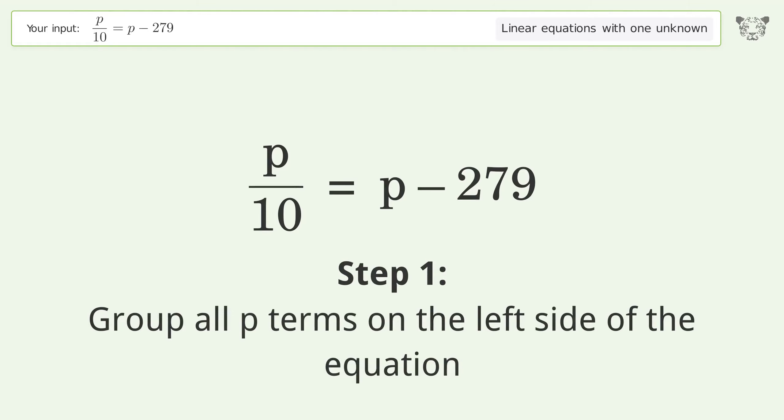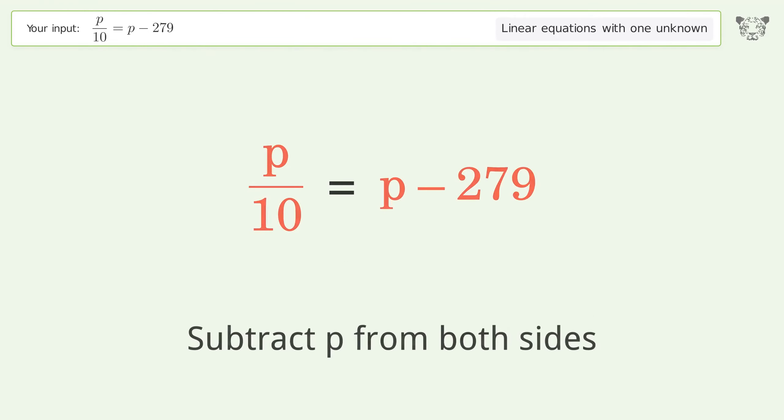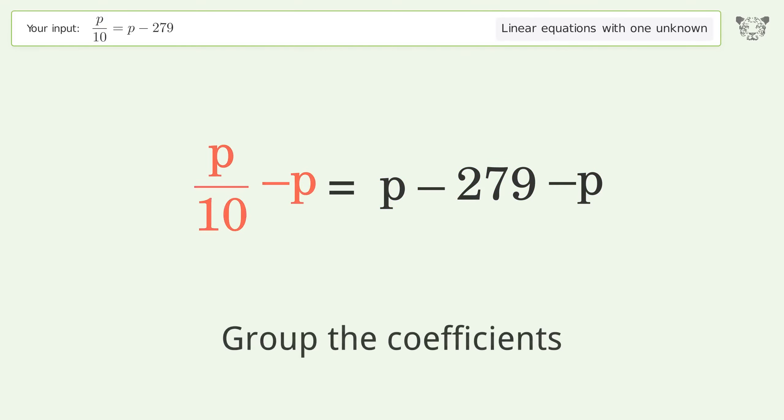Group all p terms on the left side of the equation. Subtract p from both sides. Group the coefficients.